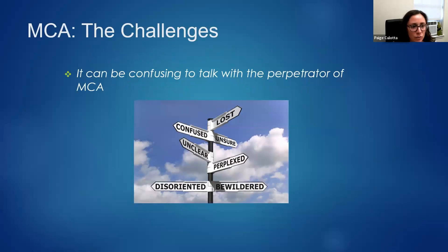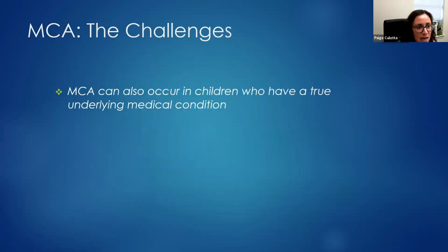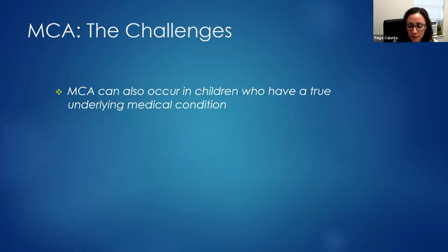The challenges of medical child abuse include: it's confusing to talk to this caregiver — and that's the point. They are trying to make us confused, to make us think this is a complex child we just can't understand, purposely leaving us lost in communication. This can also happen in a child with a genuine medical condition — they might really have an underlying syndrome with some additional fabricated things — making it hard to differentiate what is real and what isn't.